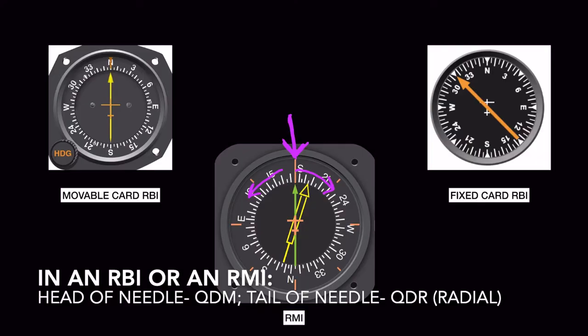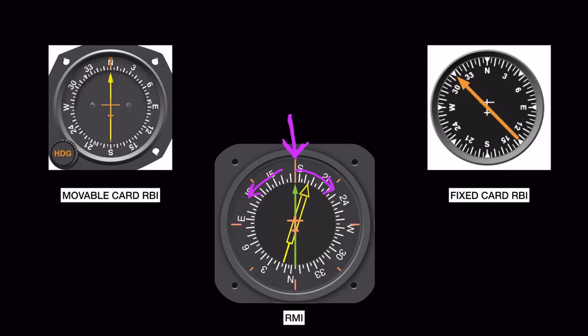In an RMI, the head of the needle shows the track required to the station — the QDM. The tail of the needle shows the QDR, which is the magnetic bearing from the station, exactly opposite to QDM. QDR is also known as the radial. For example, if I look at the green needle, the aircraft is on a radial of 355 degrees and the QDM is 175 degrees.